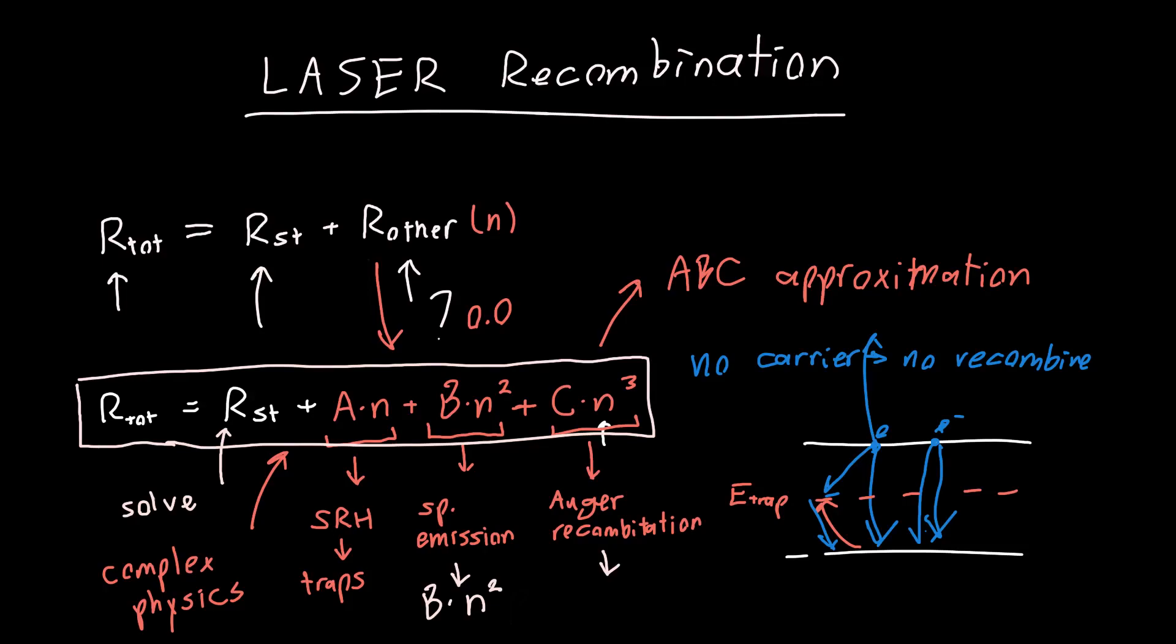And so in future videos we're going to be using this ABC approximation to figure out what our, for example, what our stimulated emission or spontaneous emission rates are as a function of the carrier density. And that will give us the same as the function as a function of current. So we will be able to figure out the what are called the LI curves or the emission as a function of current.